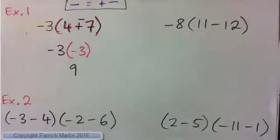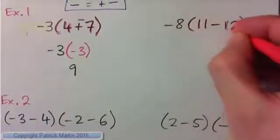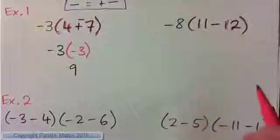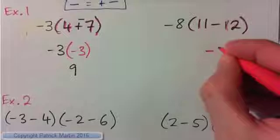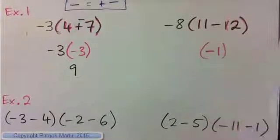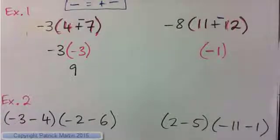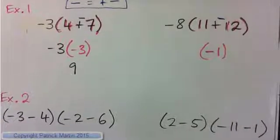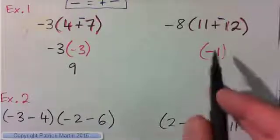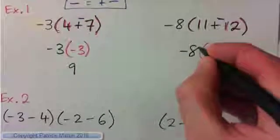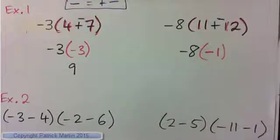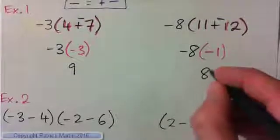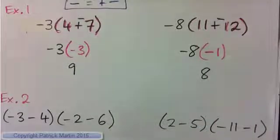I'll do it now. We've got to do parentheses first. Inside there we have eleven minus twelve. If I have eleven dollars and I subtract twelve, I'll be in debt by one. Or change subtraction to plus negative — eleven positives and twelve negatives, eleven good guys and twelve bad guys, leaves us with one negative. So negative eight times negative one is positive eight.